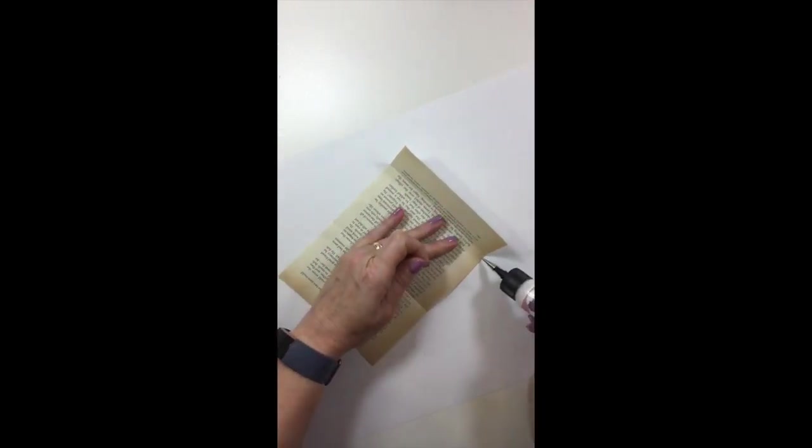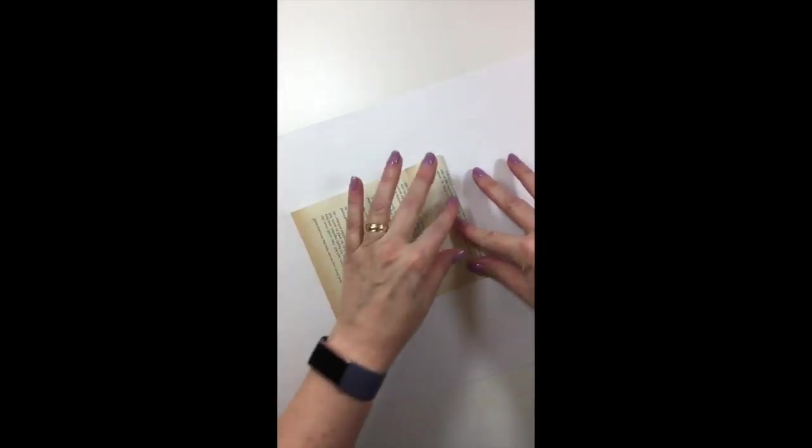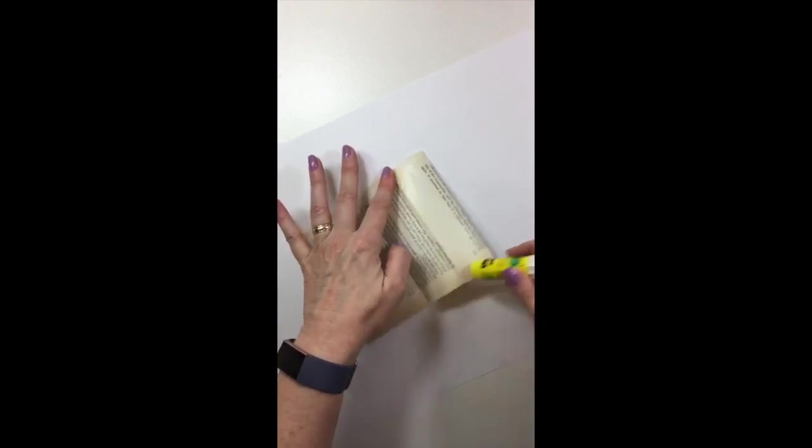I'm going to tuck that inside just because I think it looks a little bit nicer, but run a little bit of glue. I'm going to use this glue on the bottom just because it'll give a thinner, better glue. And then this one I'm just going to run the glue stick over.